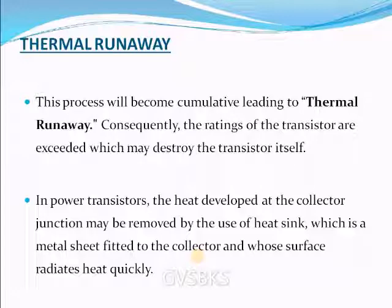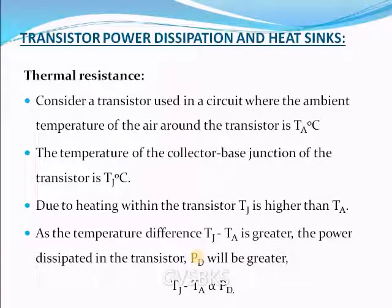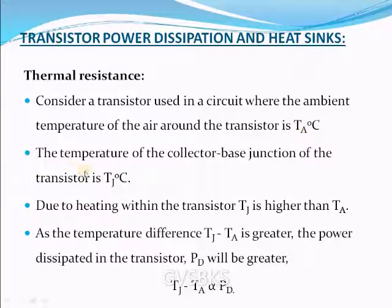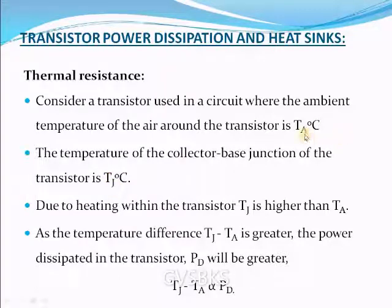Let us quickly move into thermal resistance. Consider a transistor used in a circuit where the ambient temperature of air around the transistor is Ta degrees centigrade. Ambient temperature means the temperature around the power transistor — like our environmental temperature. The temperature of the collector-base junction is given as Tj degrees centigrade, where J represents the junction and A represents ambient.